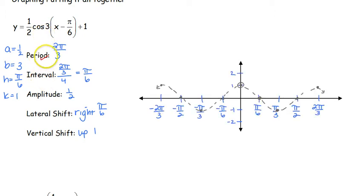Okay, so our period and our interval have been taken care of with the labels on our x-axis. Our amplitude is 1 half. So we take that starting point of cosine, which normally starts at 1, and we are going to multiply it by 1 half, which means we are now at 1 half.